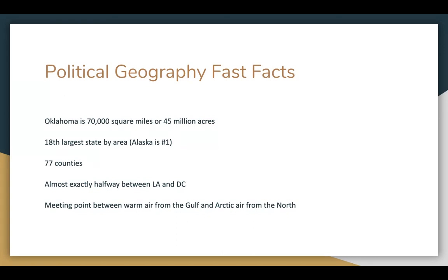Some political geography facts: Oklahoma is 70,000 square miles and 45 million acres in area, making it the 18th largest state. Alaska is number one. There are 77 counties in Oklahoma, all named after Native American tribes or men. Oklahoma is almost the exact halfway point between Los Angeles and Washington D.C., making it a true flyover state. It is also a meeting point between warm air from the Gulf and Arctic air from the north, producing interesting weather patterns particularly in the spring.